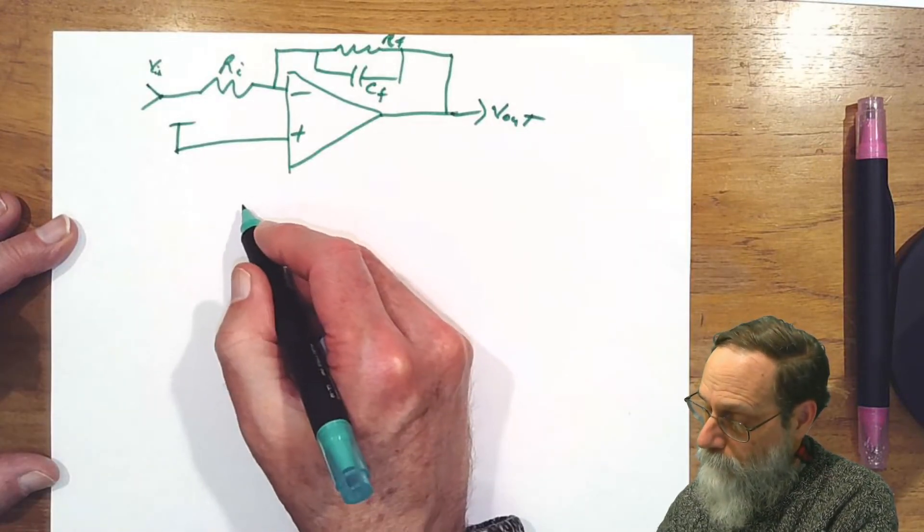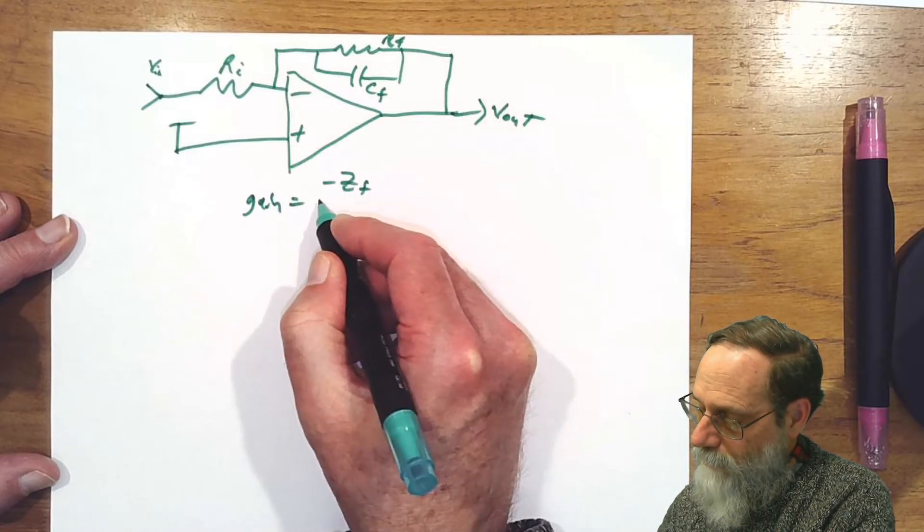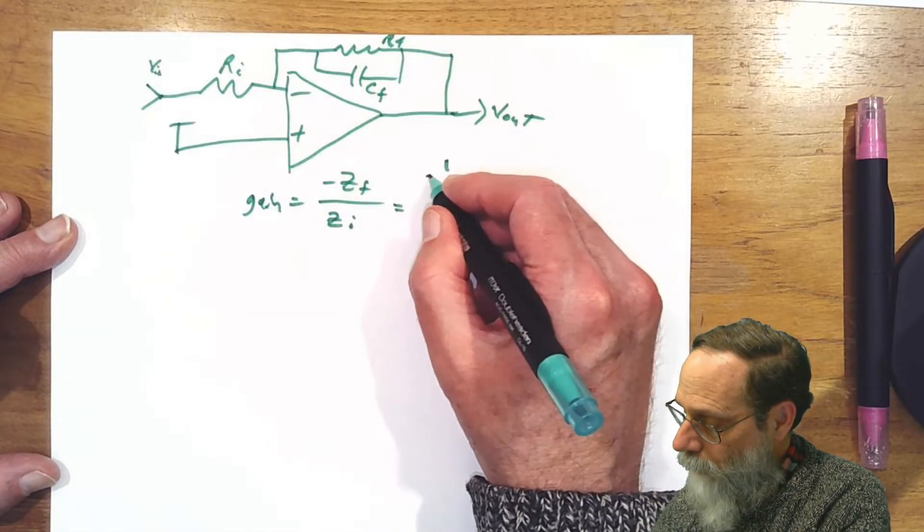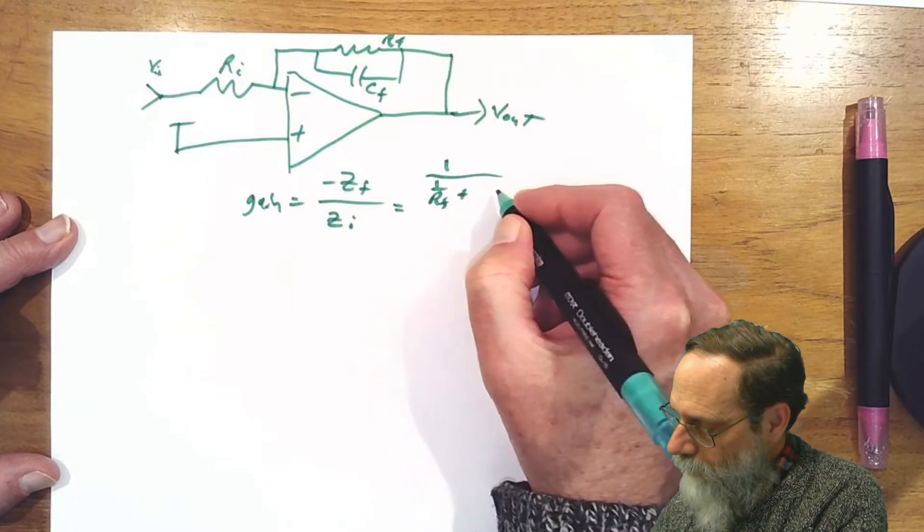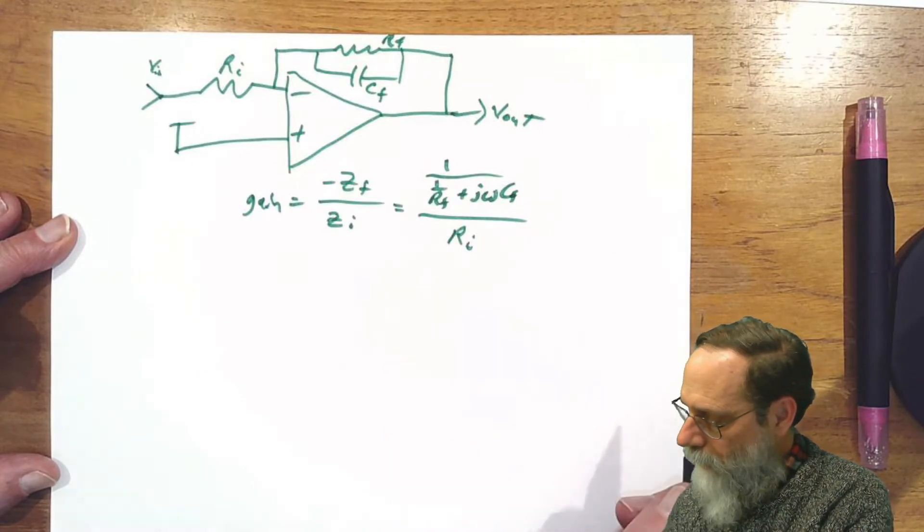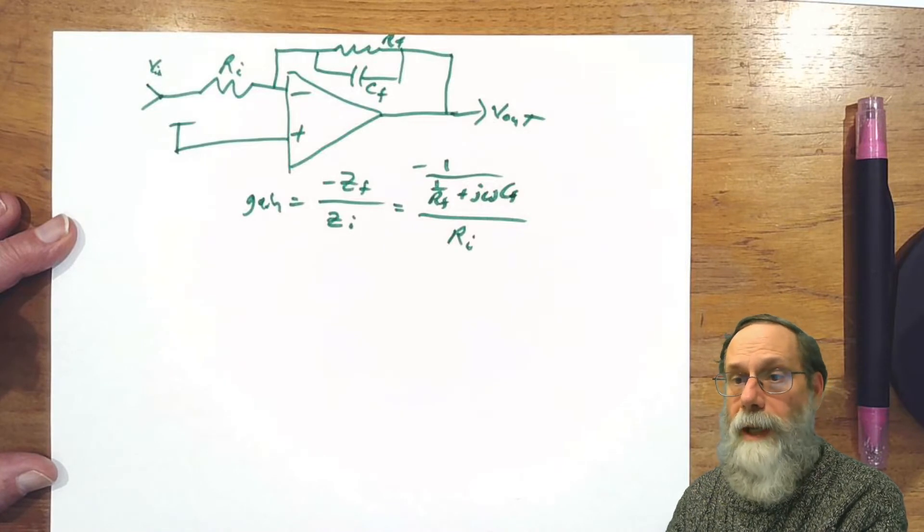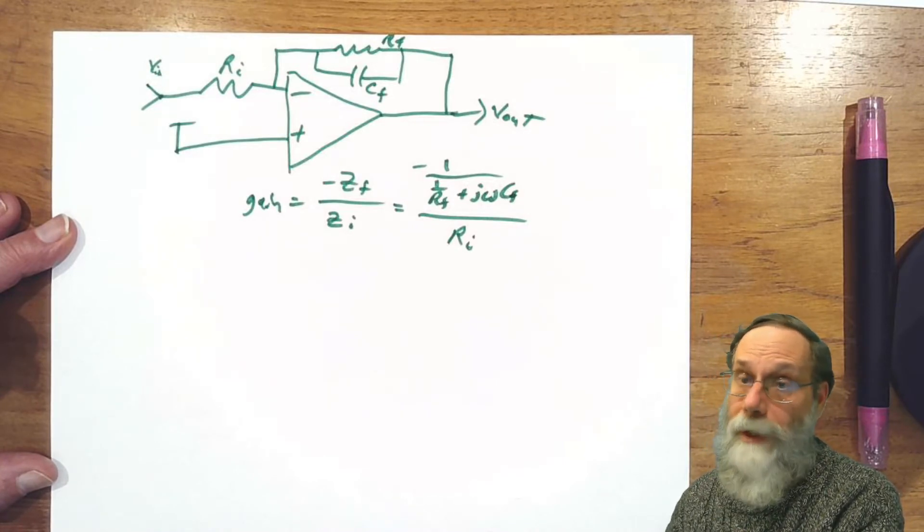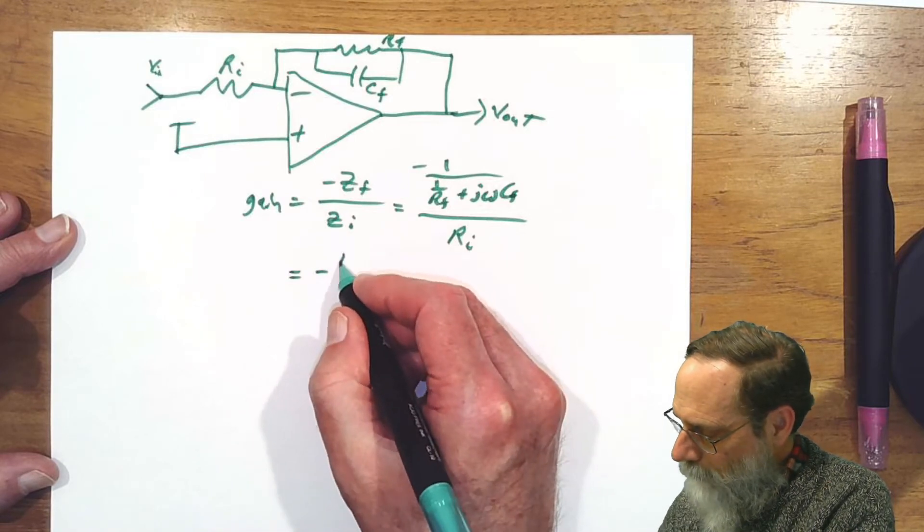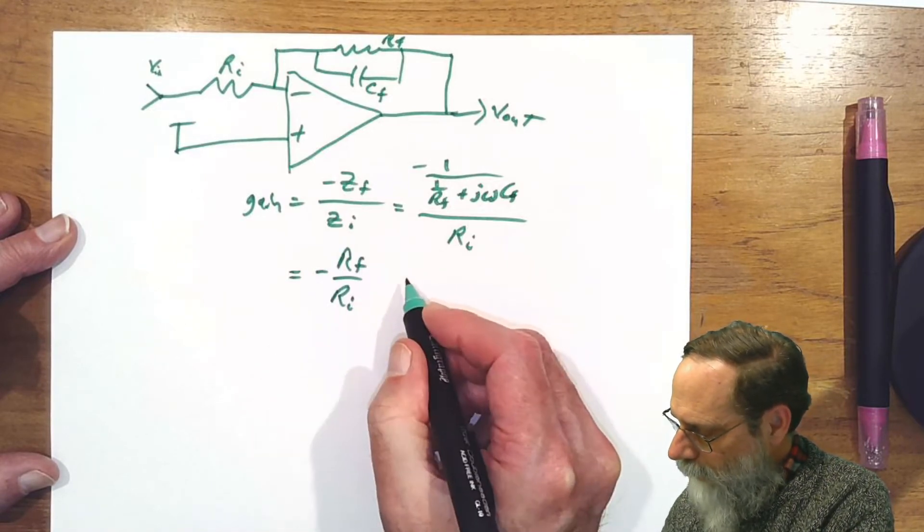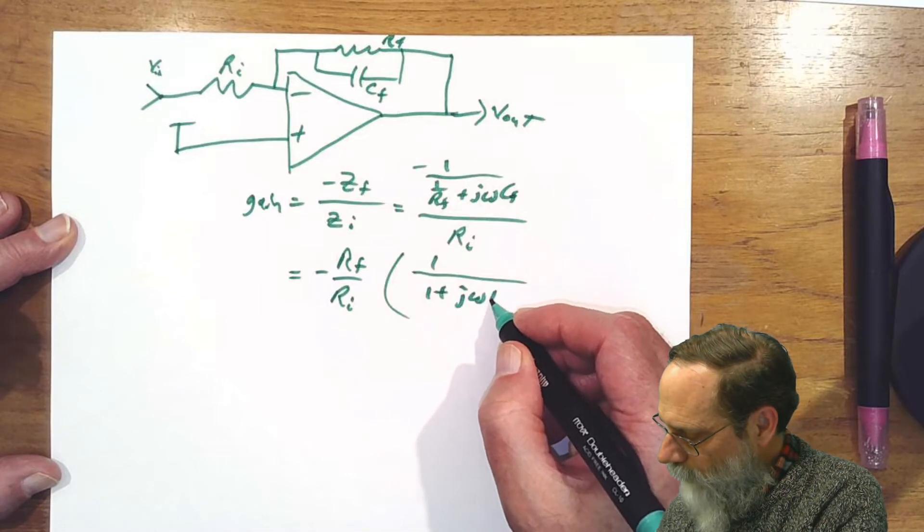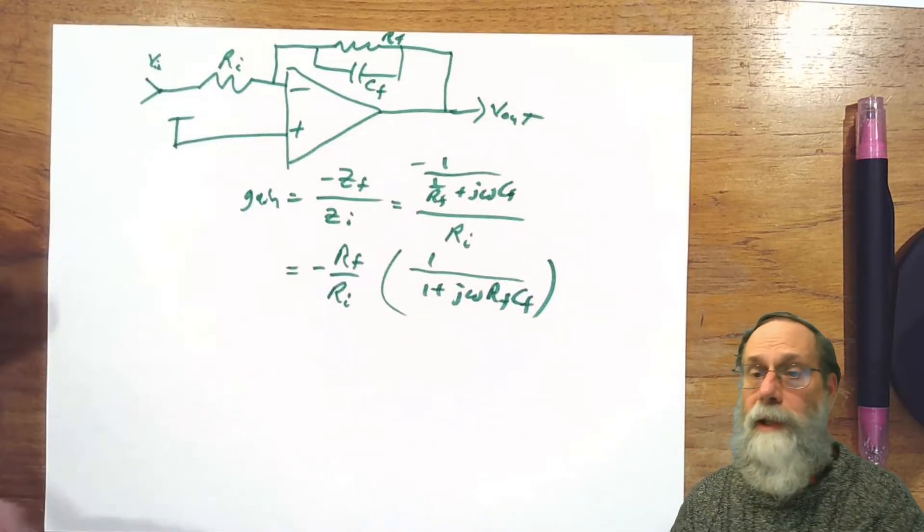The gain, then, is minus the feedback impedance divided by the input impedance. We can work that out with Rf and Cf in parallel: 1 over (1 over Rf plus j omega Cf), and that's got Ri on the bottom with a minus sign. We can simplify by multiplying top and bottom by Rf to get minus Rf over Ri times 1 over (1 plus j omega Rf Cf). So that's our gain equation.